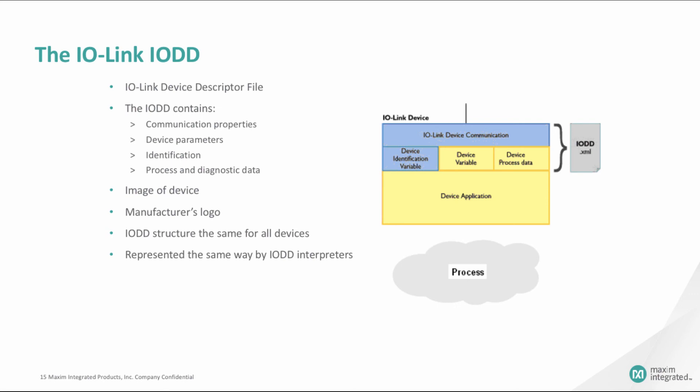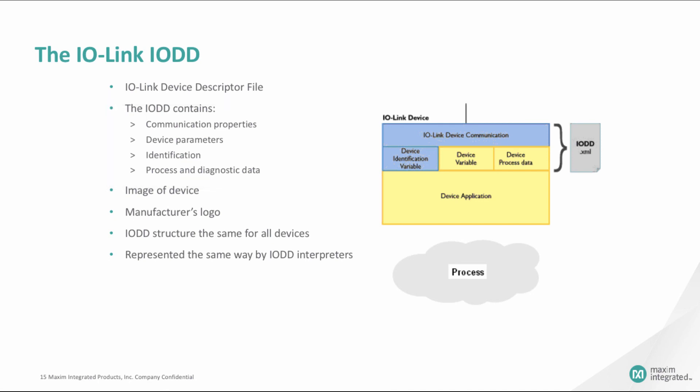All IO-Link devices — sensors or actuators — must have an IO-Link device descriptor file, called an IO-DD, available to customers. The IO-DD contains all necessary properties to establish communication, device parameters, identification information, process and diagnostic information, an image of the device, and the manufacturer's logo. IO-DD files are XML files, and their structure is outlined in a separate document from IEC 61131-9, called the IO-Link Device Description.